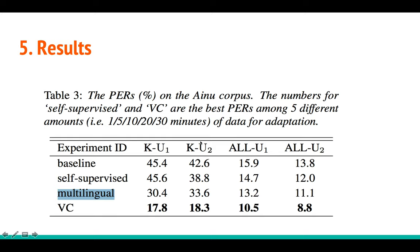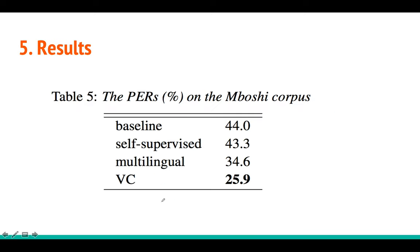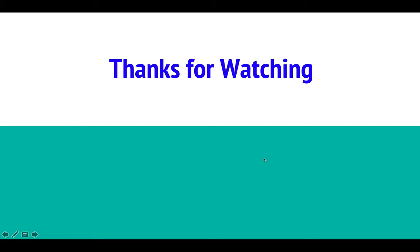Looking at the results: the baseline is a standard encoder-decoder LSTM speech recognition model. Other settings include self-supervised and multilingual approaches. Voice conversion outperforms all other approaches by a large margin — for example, improvements of around 32-70% relative, which is a very big margin. Similarly for Boshi, you get more than about 20% improvement in PER using voice conversion. That concludes this tutorial — thank you for watching, please like and subscribe.